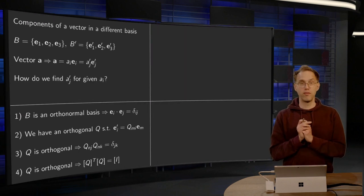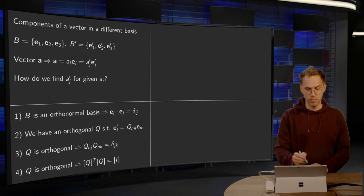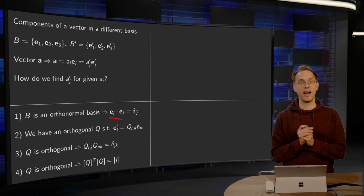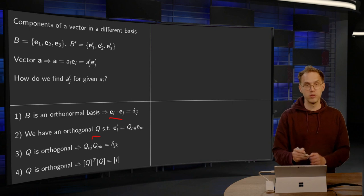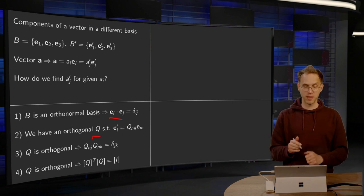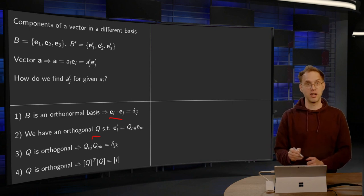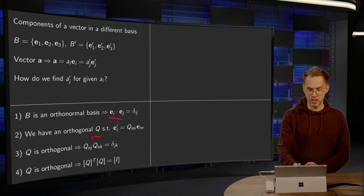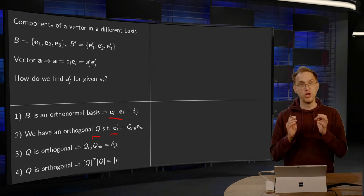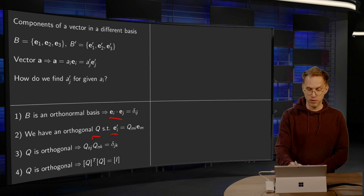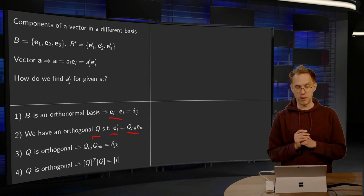So we know a few things. First of all, we use an orthonormal basis. So, inner product EI, inner product EJ is delta IJ. Furthermore, we know we have some orthogonal Q to define our new basis, and we can express our new basis vectors EI' using our orthogonal Q as follows, EI' equals QMI EM.